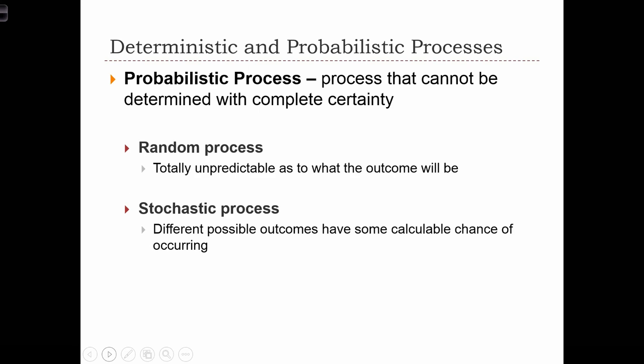A probabilistic process is a process that cannot be determined with complete certainty. So given a set of inputs, we can't be exactly sure what the output of the process will be. We can split probabilistic processes into two types: random processes and stochastic processes.